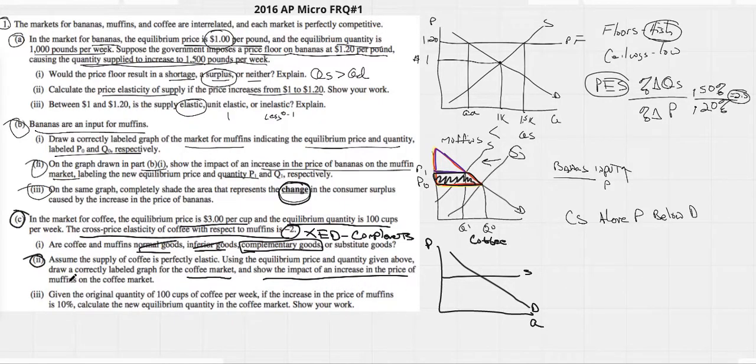Show the impact of an increase in the price of muffins. So, if they are complements, what we know is that when the price of muffins goes up, that the demand for coffee will go down. So, negatively related, that's where our negative number comes from, right? Price of muffins, demand for coffee.